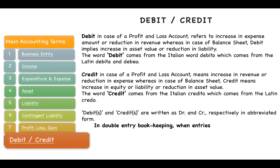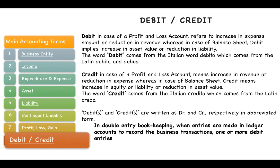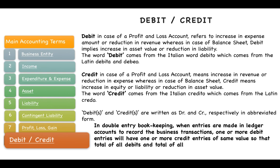In double-entry bookkeeping, when entries are made in ledger accounts to record business transactions, one or more debit entries will have one or more credit entries of the same value, so that the total of all debits equals the total of all credits at any given time. Double entry is the heart of bookkeeping, and debit and credit is the blood — that's how the double entry system works in accounting.